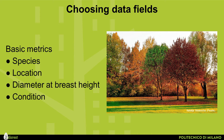There are basic metrics that should be included in every urban tree inventory, such as species, location, diameter at breast height, and condition. Beyond those, there is an abundance of supplementary data fields that can also be assessed. Many of these metrics are dependent on a certain level of expertise by those conducting the inventory. The more data fields added, the more time the inventory will take, but also the more value they will offer.